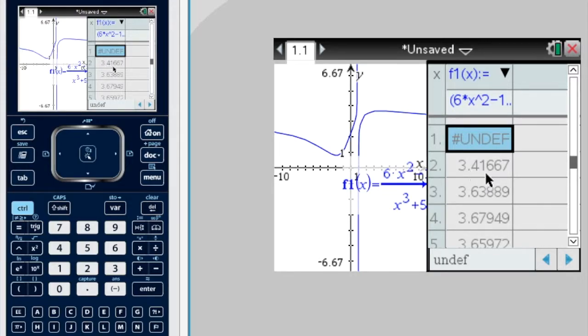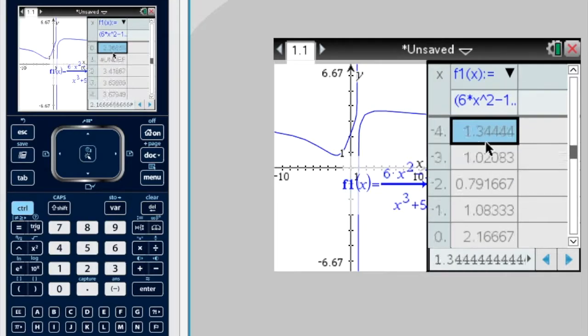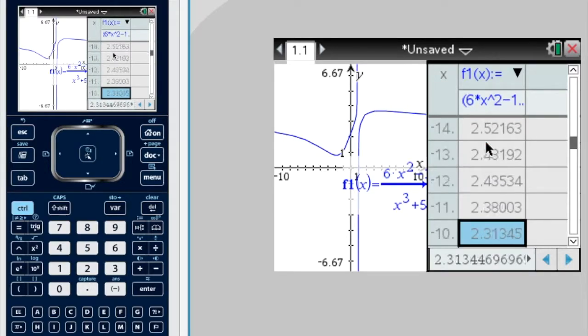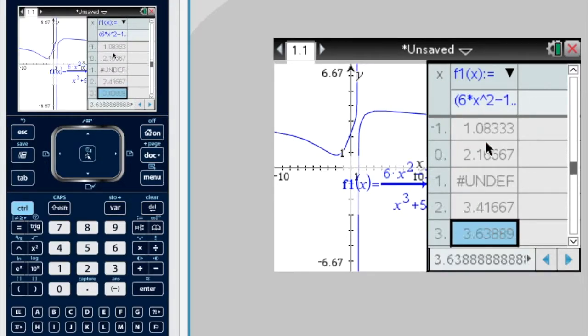Here we can see in the first column is the x values, 1, 2, 3, 4, and then we've got the y values in the second column. Now, by scrolling up and down, we can see the y values for negative values of x and positive values of x.